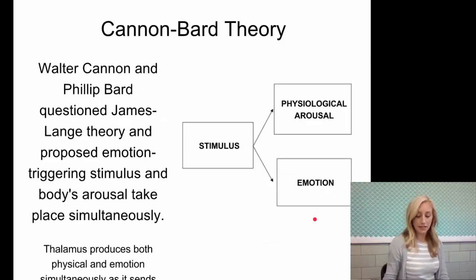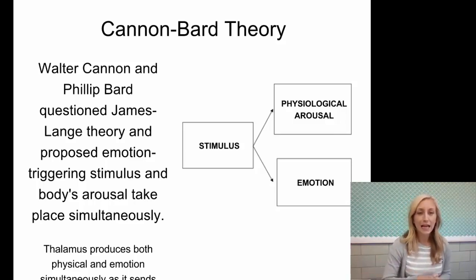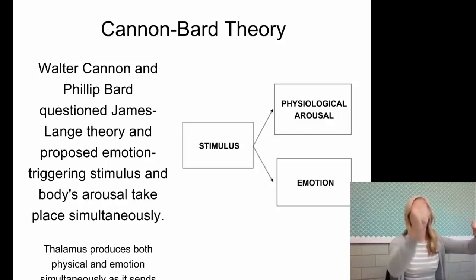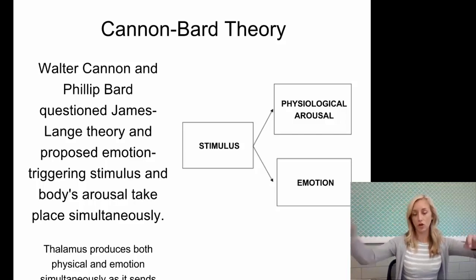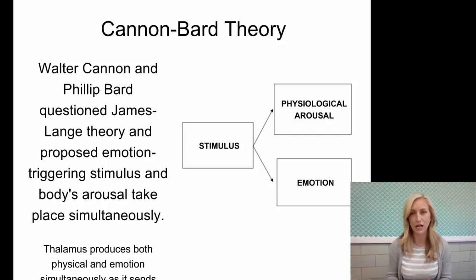The next theory is Cannon-Bard. Walter Cannon and Philip Bard questioned James-Lange and proposed that the emotion-triggering stimulus and bodily arousal take place simultaneously. James-Lange said: stimulus, then arousal, then emotion — our physical arousal causes the emotion. Whereas Cannon-Bard said no — our physical response does not create the emotion. They happen at the same time because they all have something to do with each other.